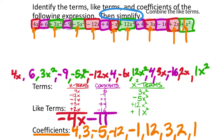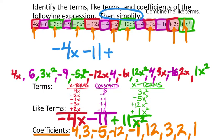Minuses and negatives mean the same thing in an expression, so we currently have negative 4x minus 11. Now combining the x squared terms: coefficients 3, minus 5, plus 12, plus 1 equals positive 11x². So the simplified expression is negative 4x minus 11 plus 11x². We took 14 terms and reduced to 3 — because there were only 3 different types of terms.